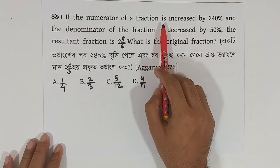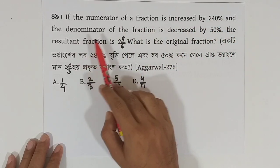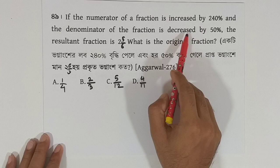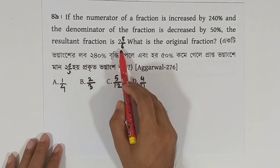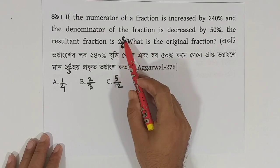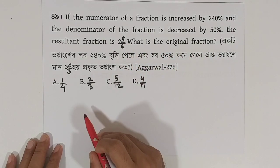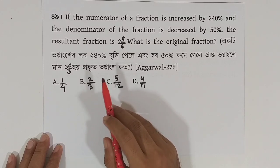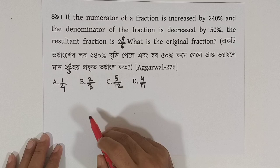If the numerator of a fraction is increased by 240% and the denominator of the fraction is decreased by 50%, the resultant fraction is 2 whole 5 by 6, what is the original fraction?